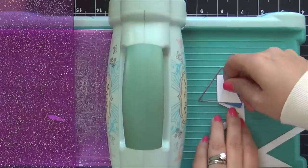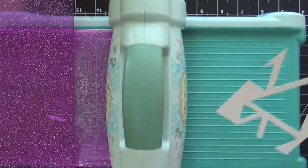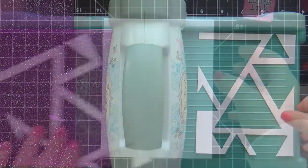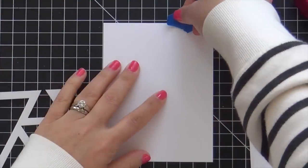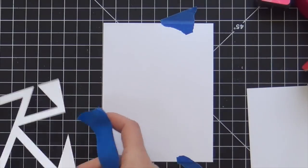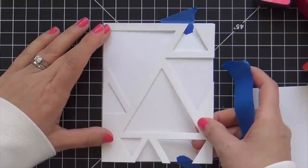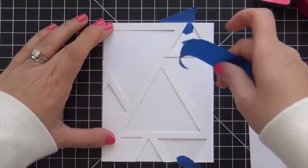I did cut a few more triangles in various sizes, just kind of filling in some gaps here and there. Now I'm going to take this triangle panel and lay it over top of a white card base. I've created a top folding standard size white card base.